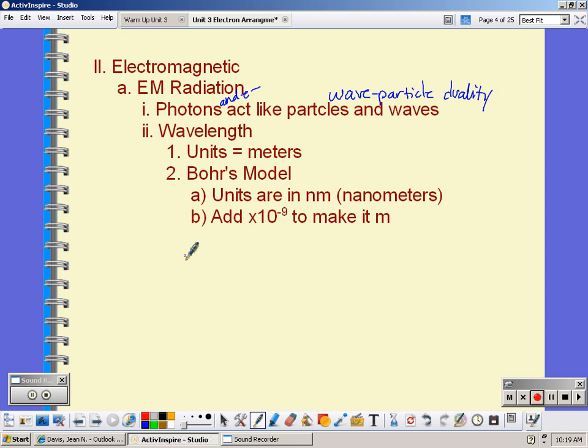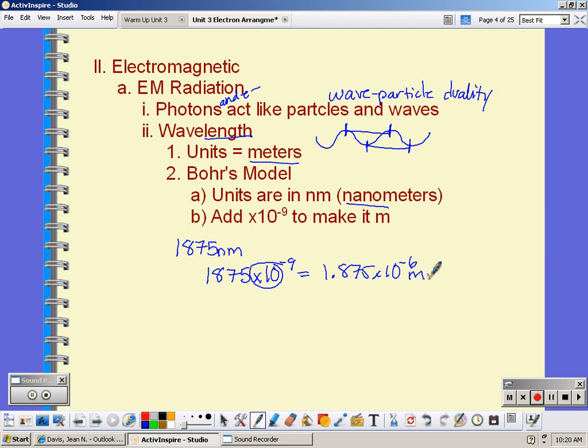Wavelength is the distance between two points on a wave. So if we look at a wave, the wavelength could be the distance from crest to crest or trough to trough. Because it's a measurement of length, we use meters. Now our Bohr's model in our reference table actually measures it in nanometers because it's really small measurements. So how do you convert from nanometers to meters? You just have to tack on times 10 to the negative 9. So if your Bohr's model says that the wavelength is 1875 nanometers, then you would take your calculator and type in 1875 special button negative 9. And that would give you 1.875 times 10 to the negative 6 meters. So again, all you're doing is tacking on the times 10 to the negative 9.